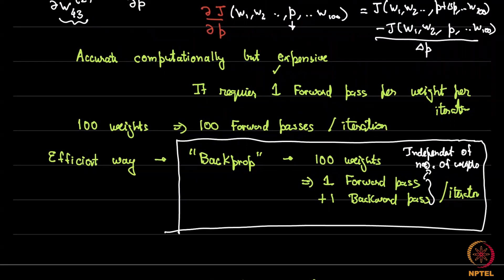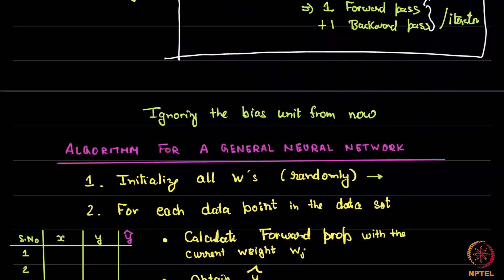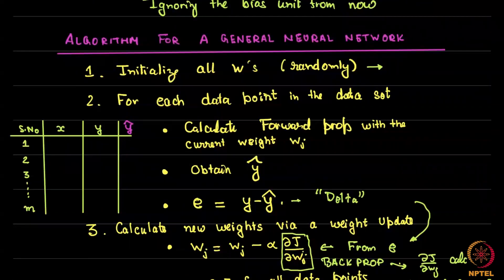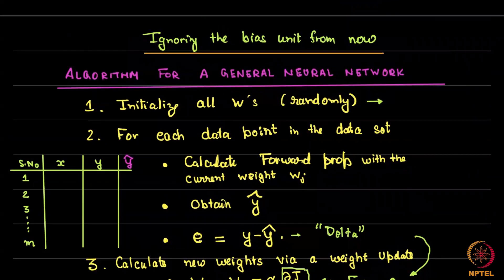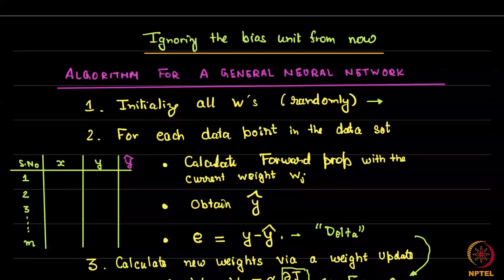From now on I'm going to ignore the bias unit. All the expressions I'm writing are without the bias unit. You should be able to do it for the case with bias by yourself, though that's not expected in the exam. Let's look at the general neural network algorithm.